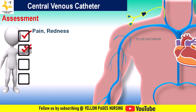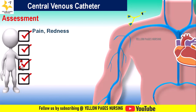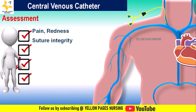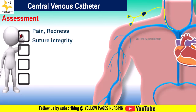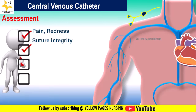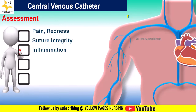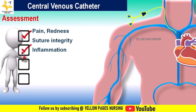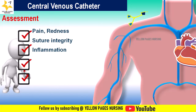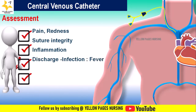Next, we assess for suture integrity — checking if it is intact and in place. Then assess for inflammation, indicated by signs such as redness, swelling, and the skin being warm to touch. Also assess for any discharge at the site.